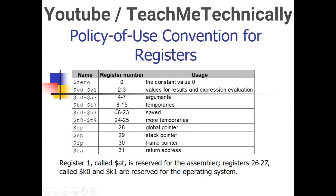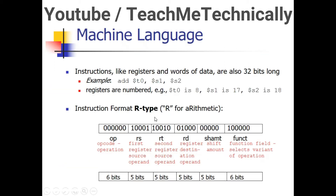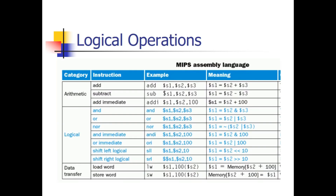In the case of t0 its register number is 8, so what we do is convert 8 into binary and then place that 5-bit binary value in the place of RD. The same process applies for the RS and RT registers.